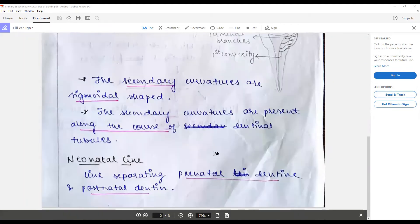The line separating the dentine that is formed before birth and after birth is called the neonatal line or contour lines, and it is an accentuated contour line of Owen.